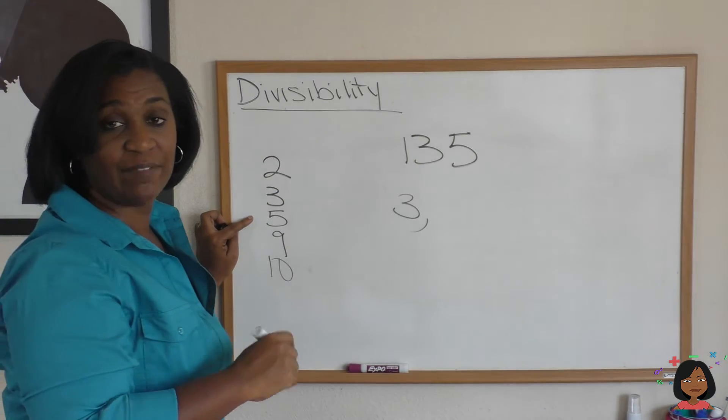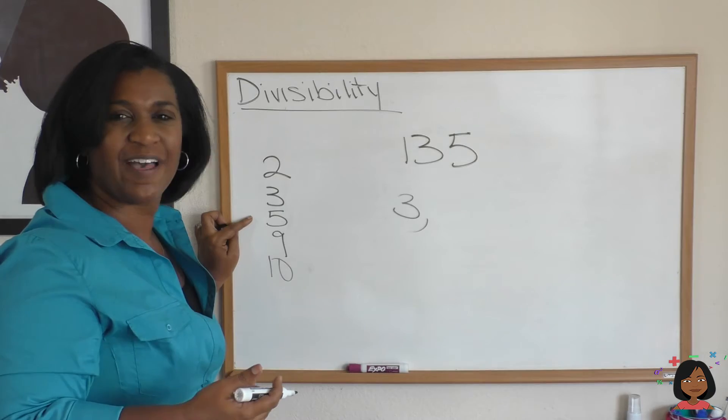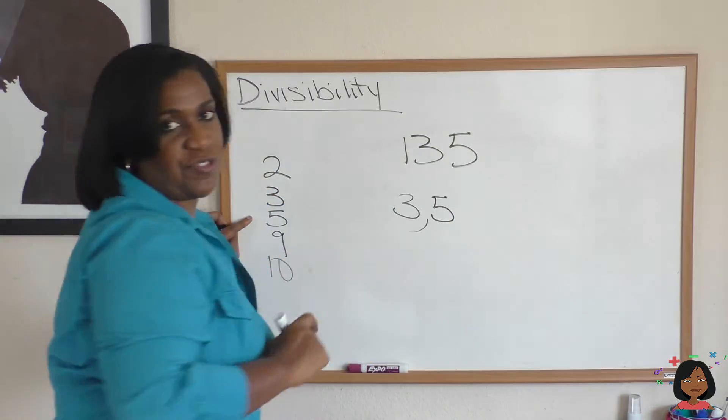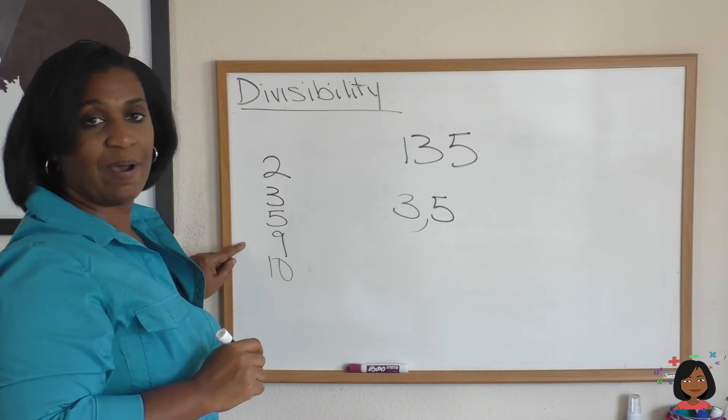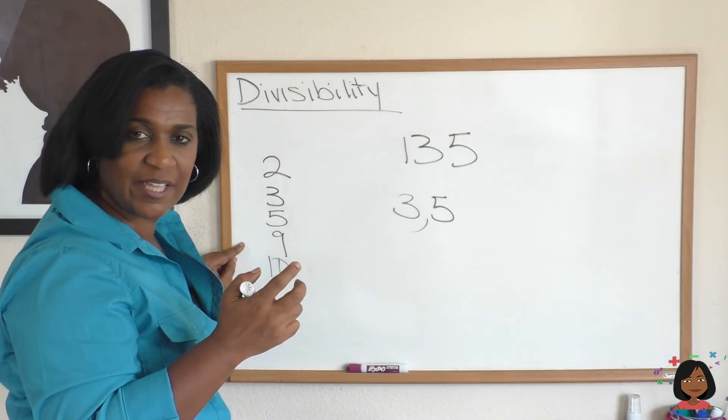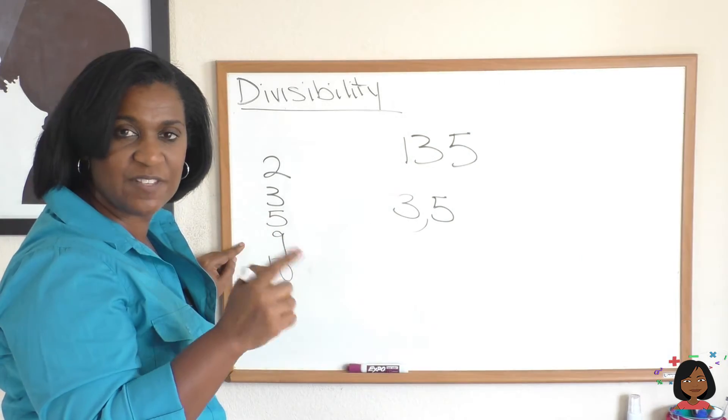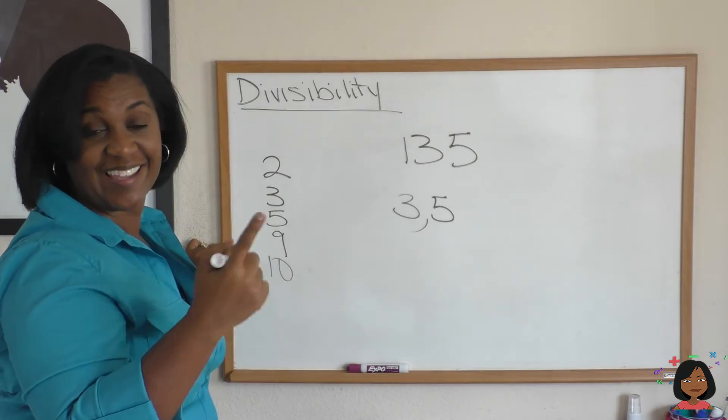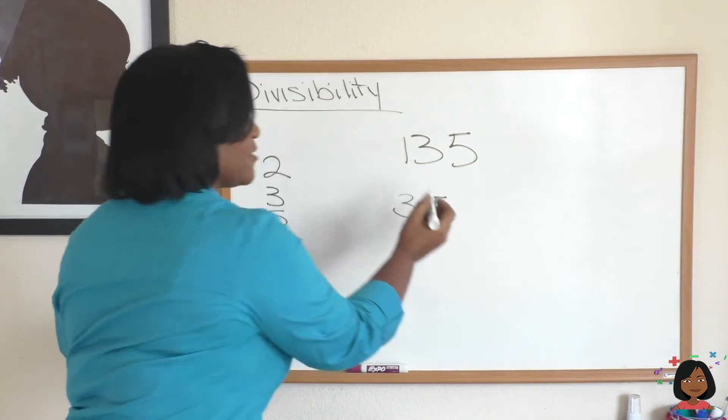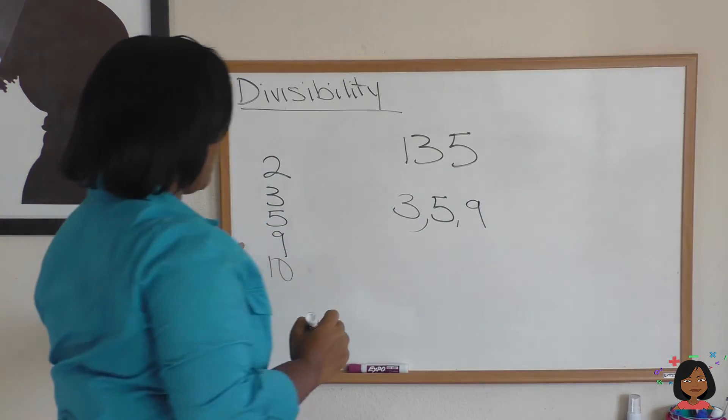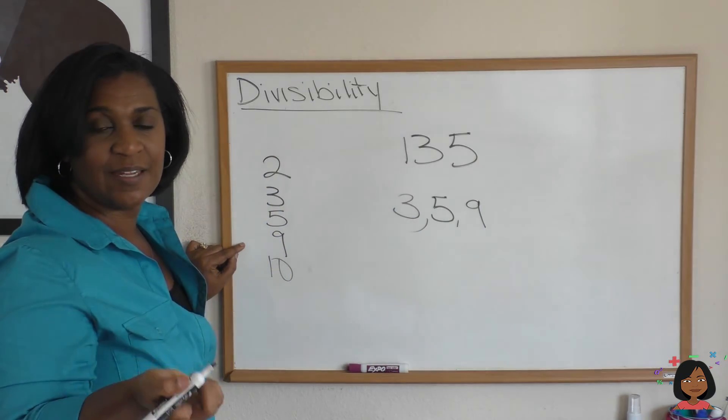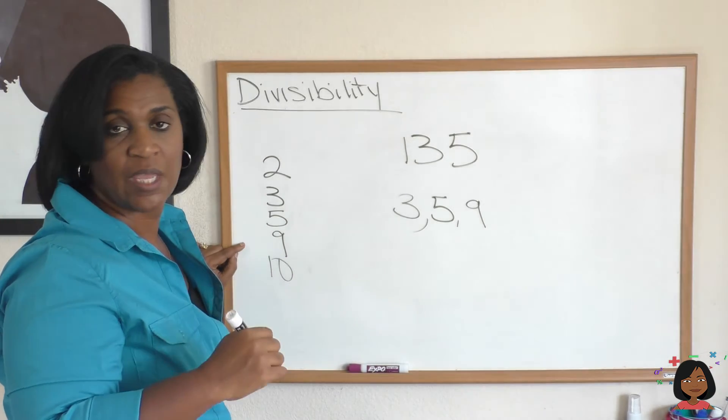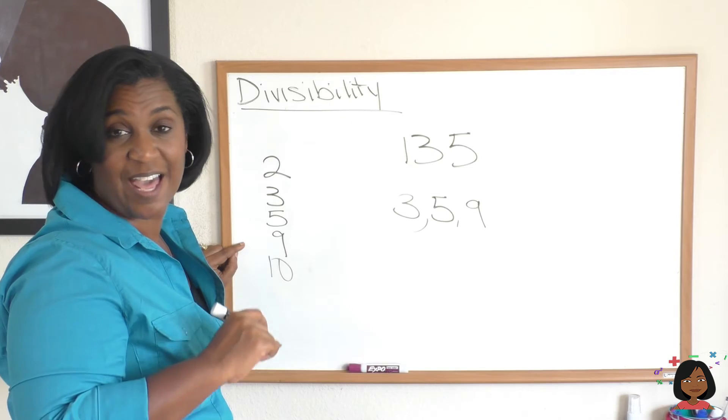What about 5? Does it end in a 5 or 0? 135 does end in a 5 or 0. So 5 is a factor of 135. What about 9? Remember, we add the digits together and see if that total is divisible by 9. We said 4 plus 5 is 9. Yes, 9 can be divided into 9. So that means that 9 is a factor of 135. And what about 10? It has to end in a 0. 135 does not. So it is not divisible by 10. 10 is not a factor.